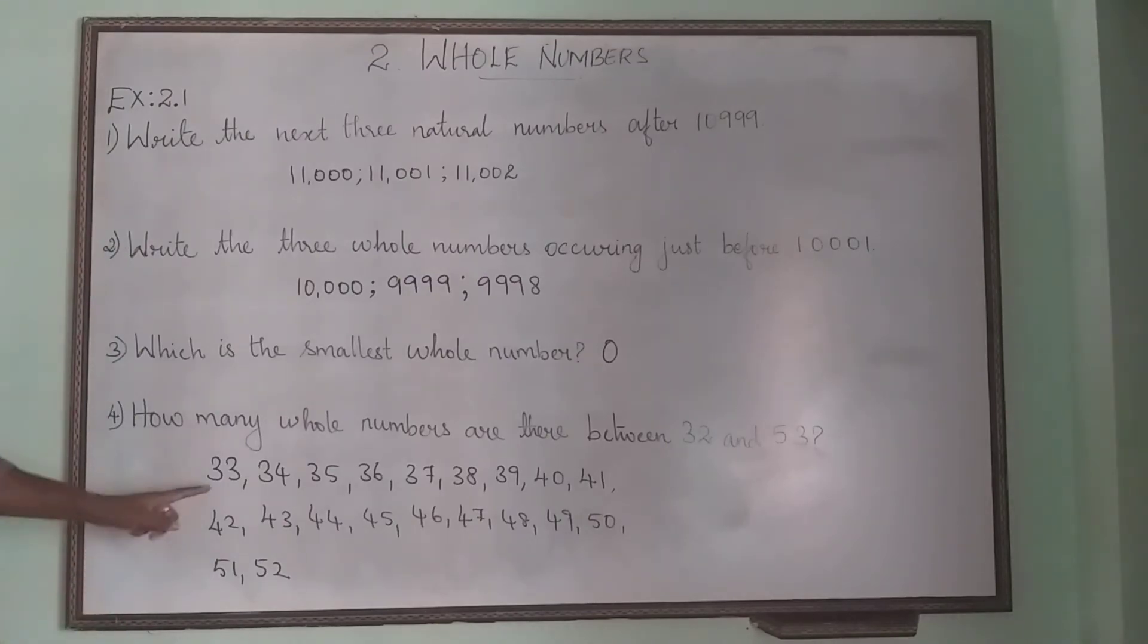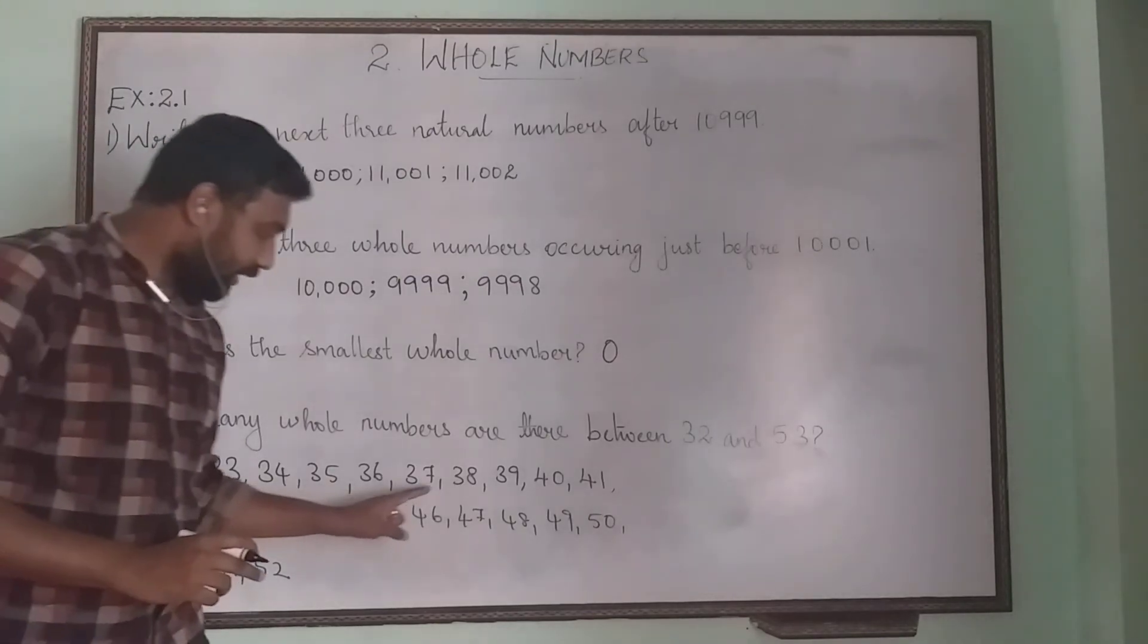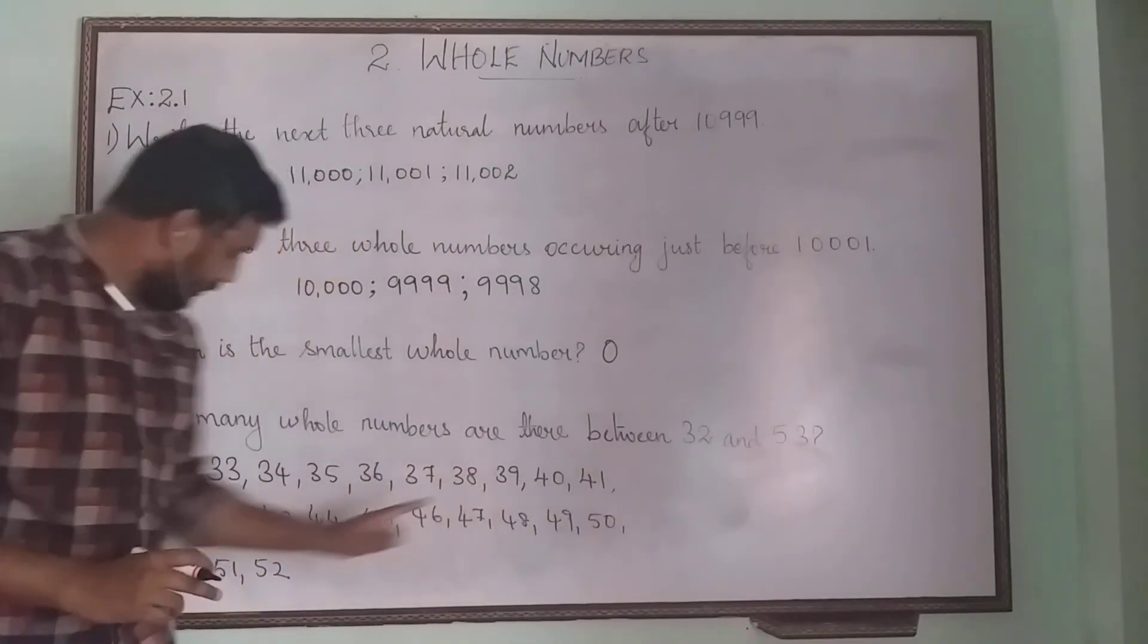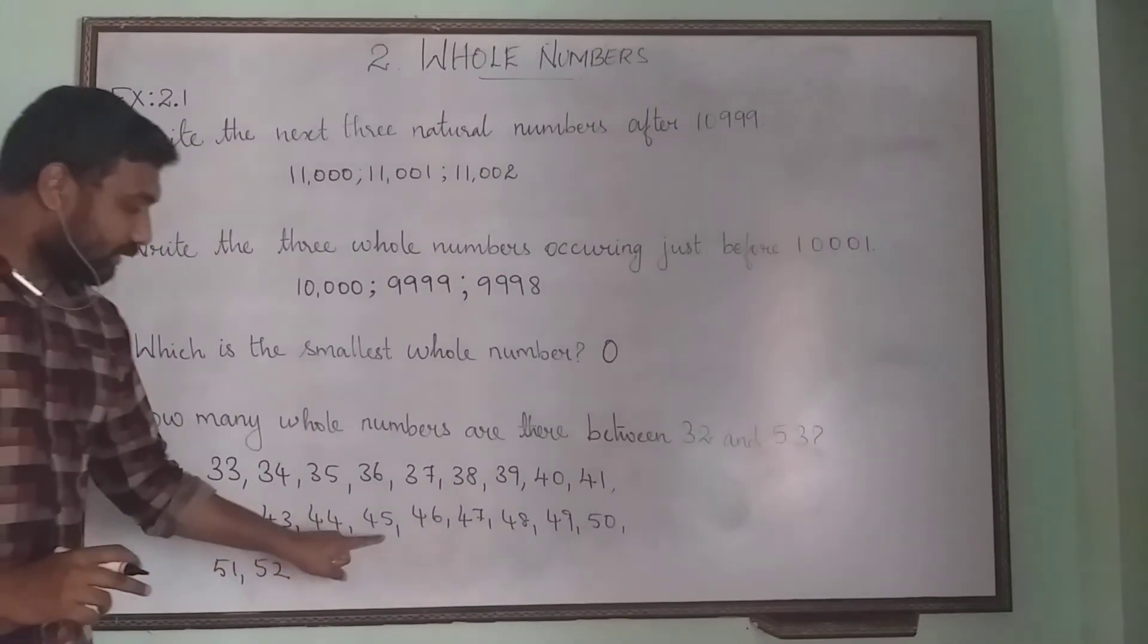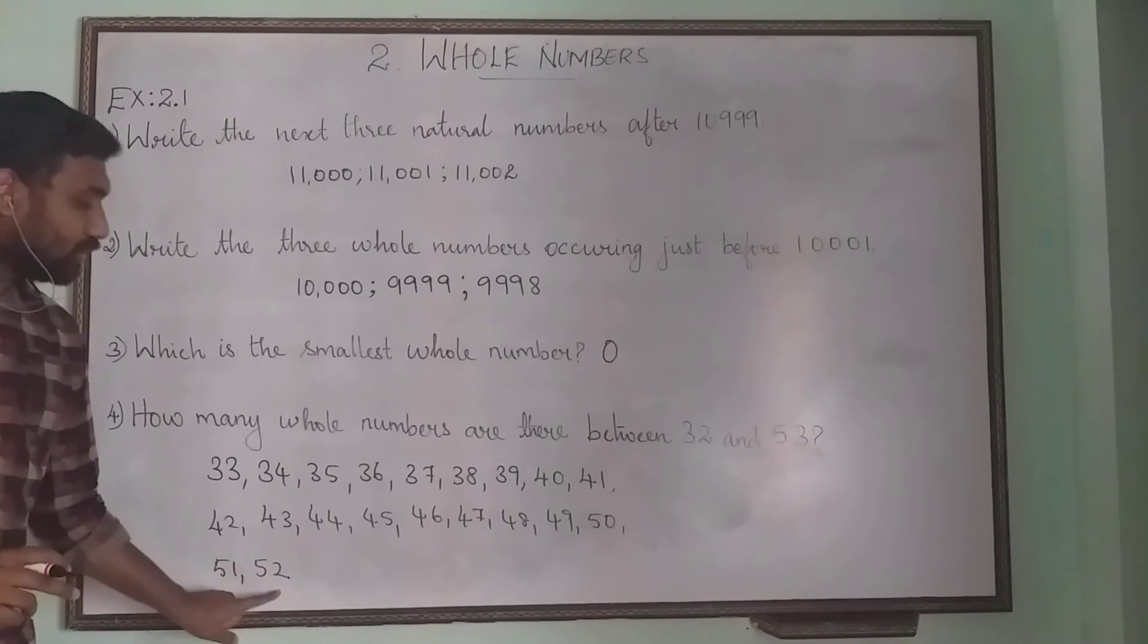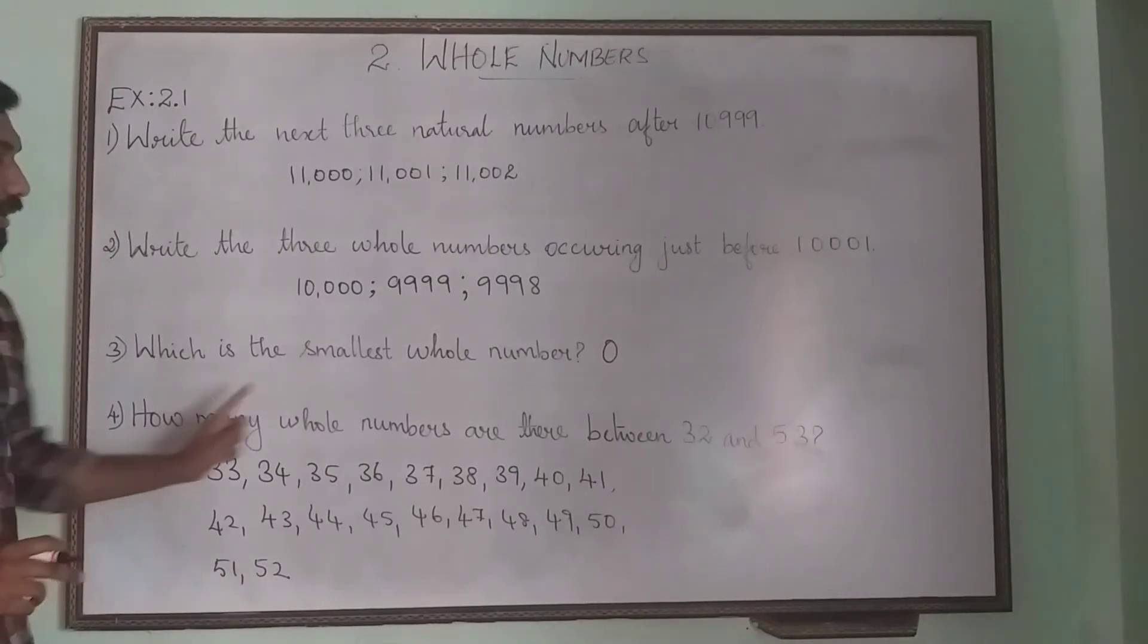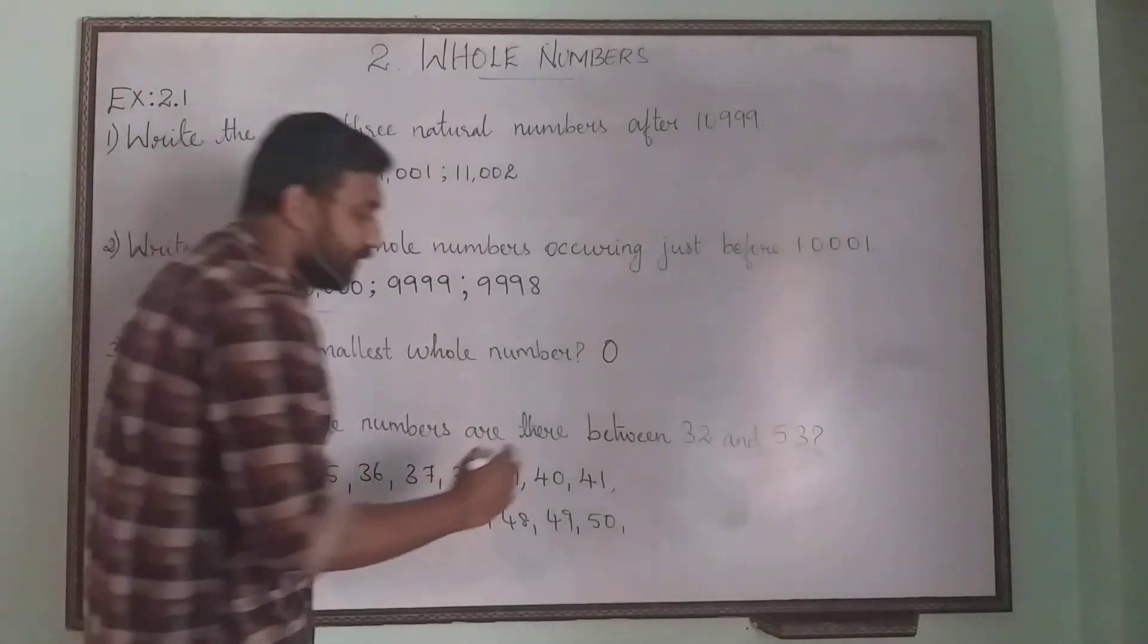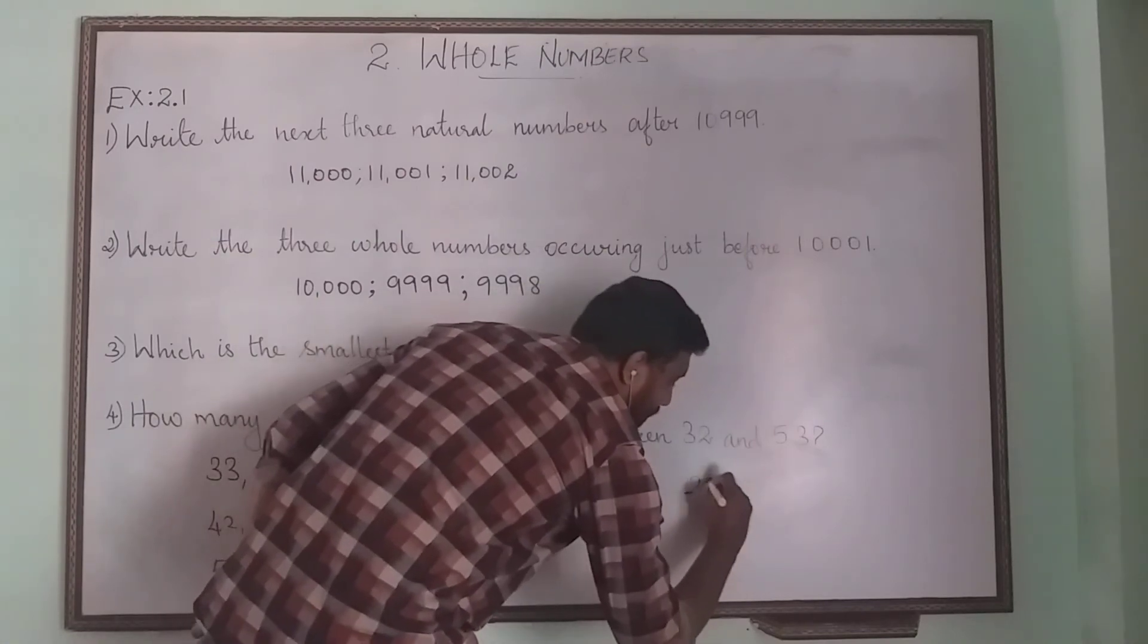So just count how many numbers: 1, 2, 3, 4, 5, 6, 7, 8, 9, 10, 11, 12, 13, 14, 15, 16, 17, 18, 19, 20. So how many whole numbers are there between them? We have 20 numbers.